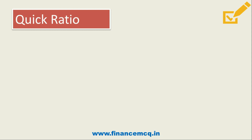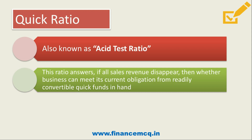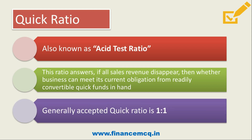Now let's discuss quick ratio, also known as acid test ratio. This ratio answers: if all sales revenue disappears, whether the business can meet its current obligations from readily convertible quick funds in hand. If we don't have any sales revenue, can we meet our current obligations from ready cash? The generally accepted quick ratio is 1:1, while the ideal current ratio is 2:1.